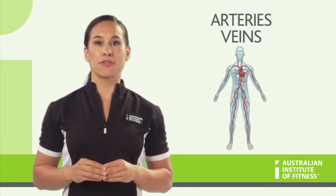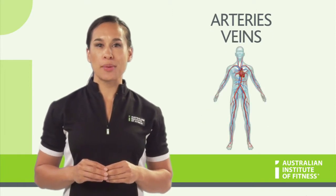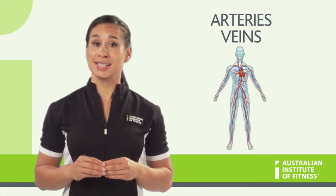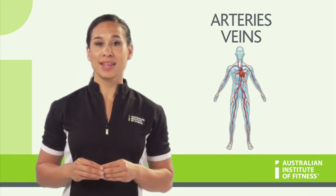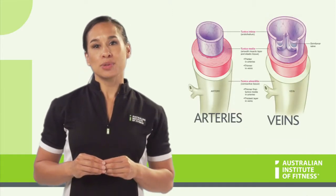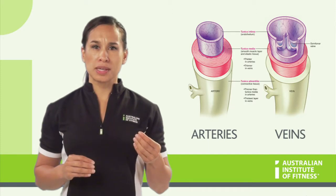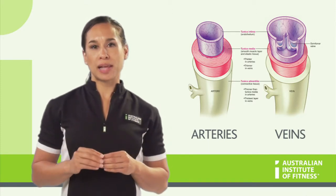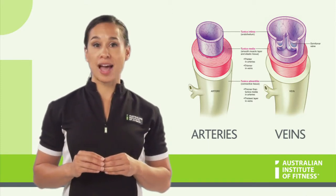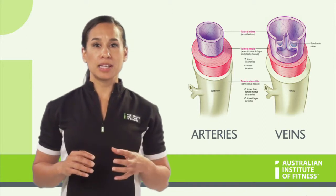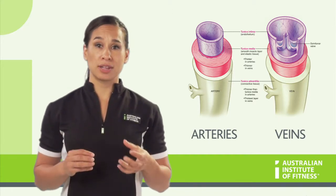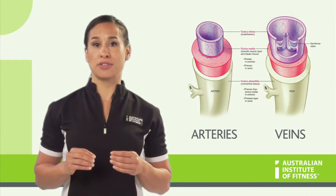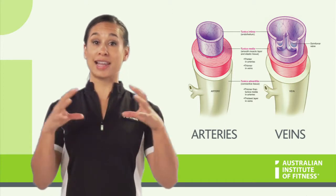The arteries and veins are like the free flowing highways of our body — once on them, there is no opportunity to get off or to stop. Arteries, which have thick walls, are made of smooth muscle and elastic tissue, and they will always take blood away from the heart. They have the ability to contract and relax, or in technical terms, they have the ability to vasoconstrict or vasodilate.